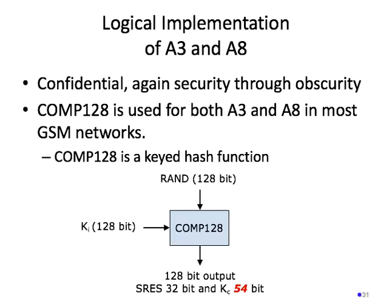In reality, an algorithm known as COMP-128 is used for both A3 and A8 in most GSM networks. One of the more depressing parts about COMP-128 is that it is yet another example of security through obscurity — the algorithm was confidential and not published in any way, and was actually reverse engineered quite some time ago. COMP-128 is a keyed hash function that takes the 128-bit random and the 128-bit subscriber key and generates a 128-bit output including the SRES of 32 bits and the session key of supposed 64 bits. When reverse engineered, they discovered that K_C in the COMP-128 implementation only has 54 bits of entropy, and 10 of those bits are actually zeroed out.